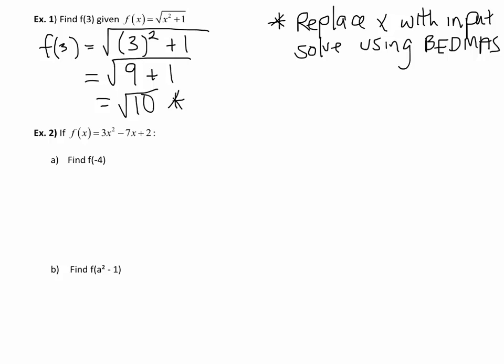Example 2: we've got f(x) equals 3x squared minus 7x plus 2. So find f(-4). Again we're plugging in anywhere that there is an x, we are plugging in a negative 4. Keep the brackets around it so that that negative doesn't become a problem when we go to use our BEDMAS rules.